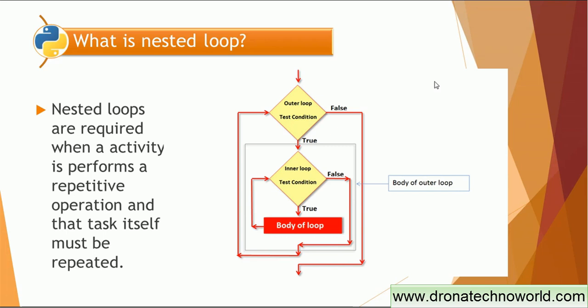If you see the figure on the right-hand side, we have the outer loop. The outer loop comes to the condition; if the condition is true, the logic inside that outer loop body will be executed. Within that body, another loop — called the inner loop — will be there. The inner loop also has a condition; if true, the inner loop body executes. If the inner loop condition is false, it exits and goes back to the outer loop. If the outer loop condition is also false, the outer loop exits.